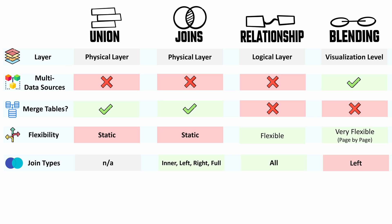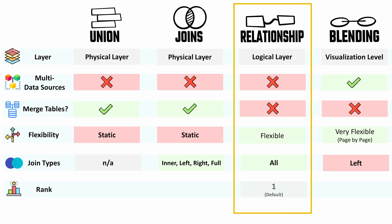If you ask me to rank these methods — and Tableau would agree — always use relationships first. After that comes data blending, which is a great way to combine tables from different data sources and offers a lot of flexibility.